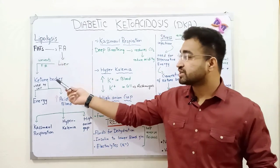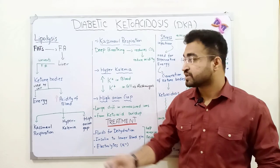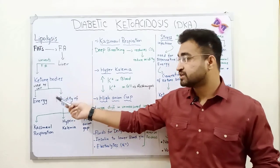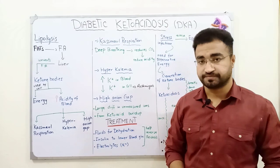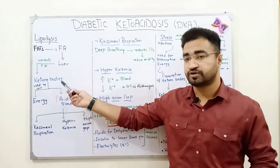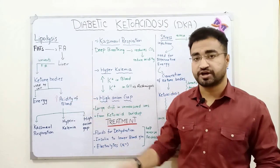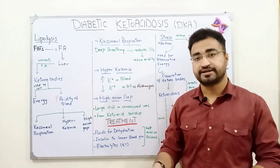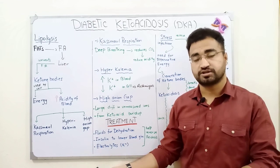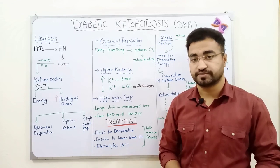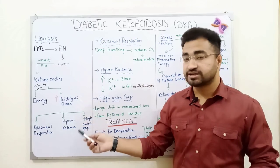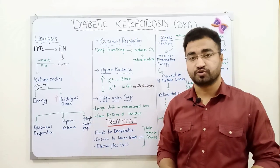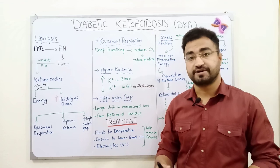These ketone bodies can then be used by cells for the production of energy, because they can be broken down into acetyl coenzyme A, which can enter the TCA cycle and produce energy. This alternative energy pathway is used by the body in type 1 diabetes when glucose cannot reach the cells.